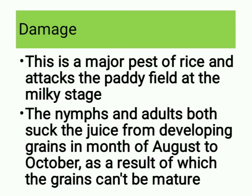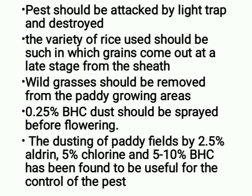The nymphs and adults both suck the juice from developing grains in the months of August to October, as a result of which the grains cannot mature. The pest should be attacked by light trap and destroyed. The variety of rice used should be such that grains come out at a late stage from the sheath. Wild grasses should be removed from paddy-growing areas. 0.25% BHC dust should be sprayed before flowering. Dusting paddy fields with 2.5% aldrin, 5% chlordane and 5–10% BHC has been found useful for control.